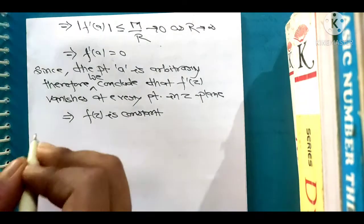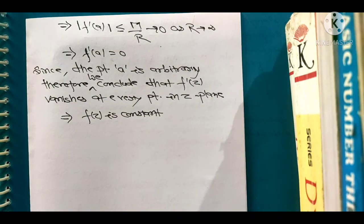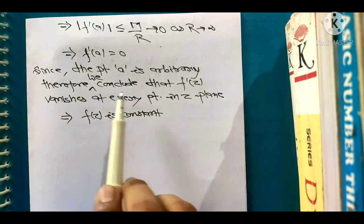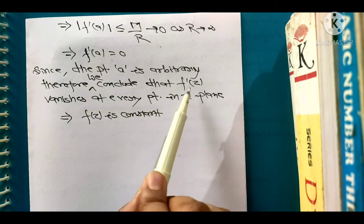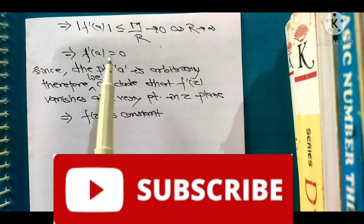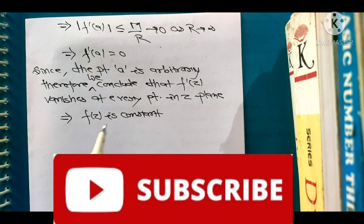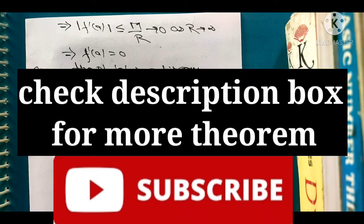So this is our proof. So we get that f is constant value always.